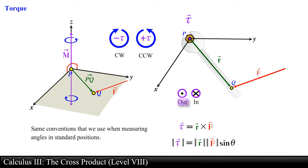We also use a dot to represent a vector that points out of the page or plane, and a cross to represent a vector that points into the page or plane.